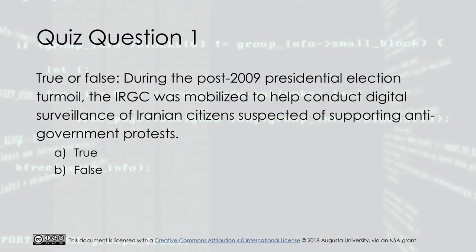Quiz question one: True or false — during the post-2009 presidential election turmoil, the IRGC was mobilized to help conduct digital surveillance of Iranian citizens suspected of supporting anti-government protests. A) True. B) False. The answer is A, true.